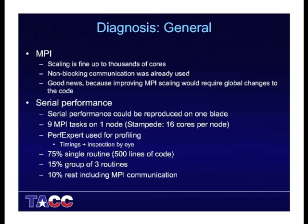I was very pleased to learn at the beginning of the project that this was more about serial performance in some isolated places in the code. The good news was that the serial performance could be easily reproduced on one node. My collaborators set up an experiment where we used just one Stampede node — a Stampede node has 16 cores — so we placed nine MPI tasks on that one node and profiled those small runs. We used PerfExpert for the profiling, and I only needed the timings to find out that 75% of compute time was used in a single routine of about 500 lines of code.